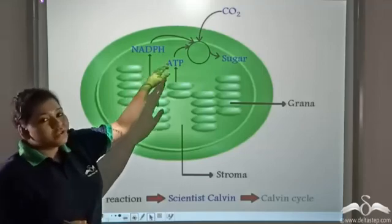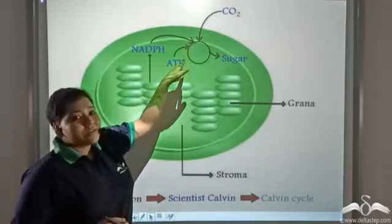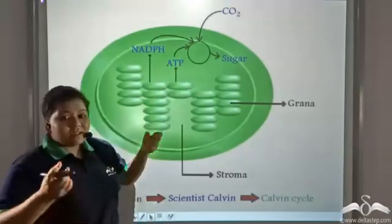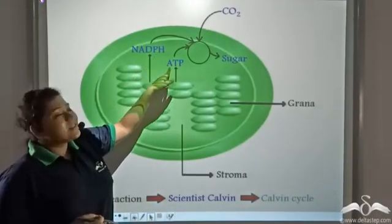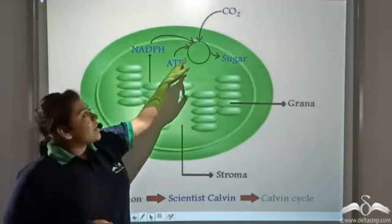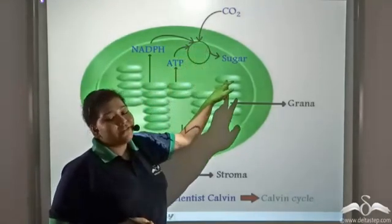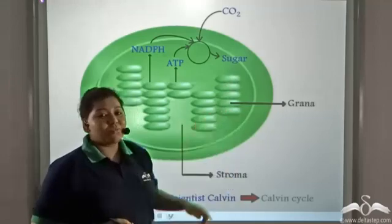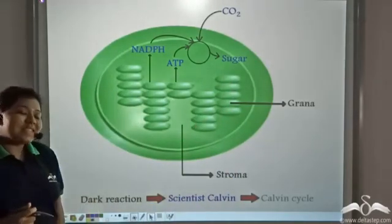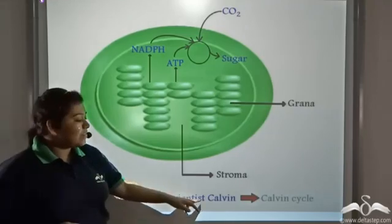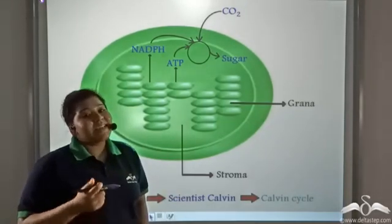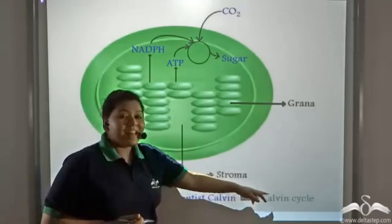In the stroma, carbon dioxide is taken in. These NADPH molecules and ATP molecules together with carbon dioxide form sugar in the stroma. Since this dark reaction was proposed by scientist Calvin, this process is also known as the Calvin cycle.